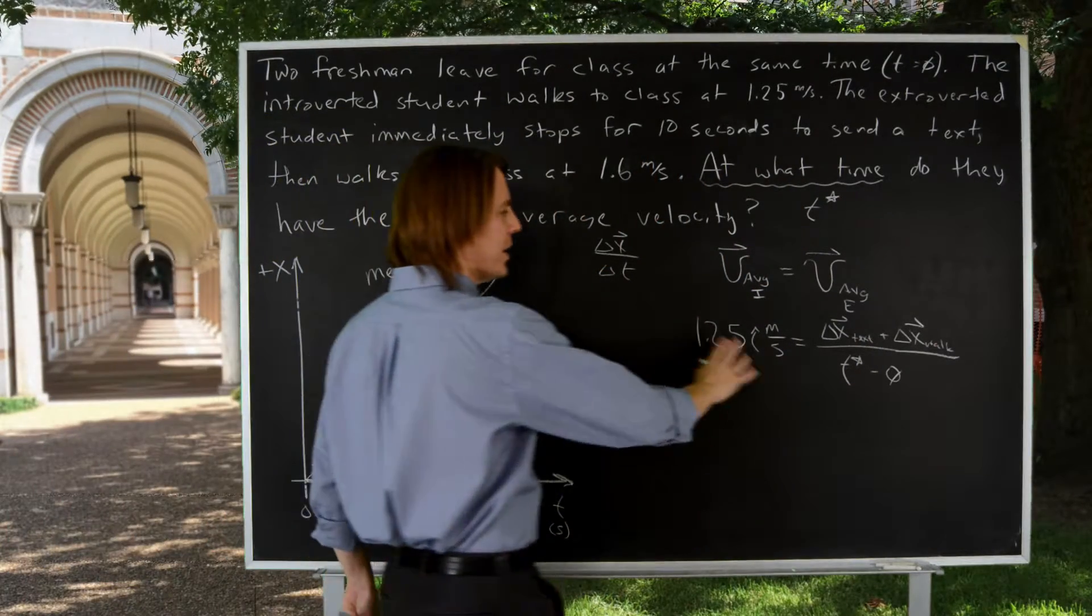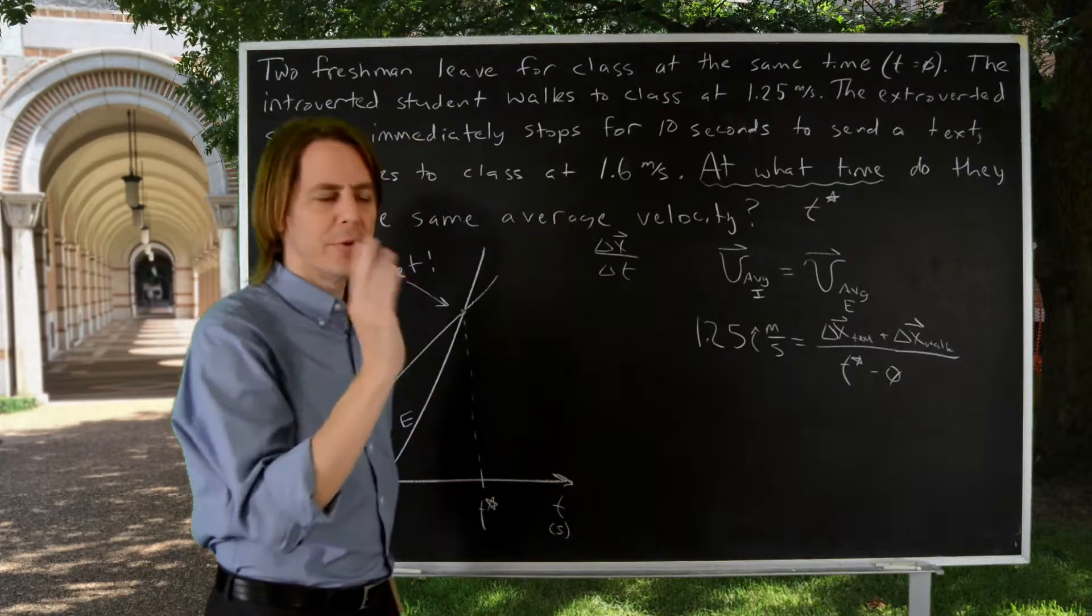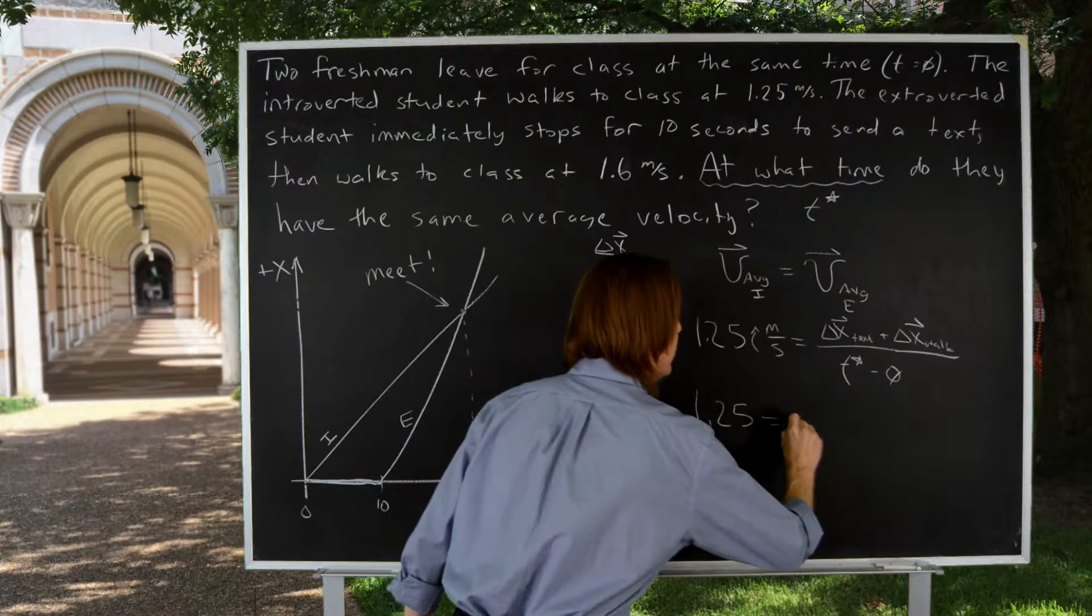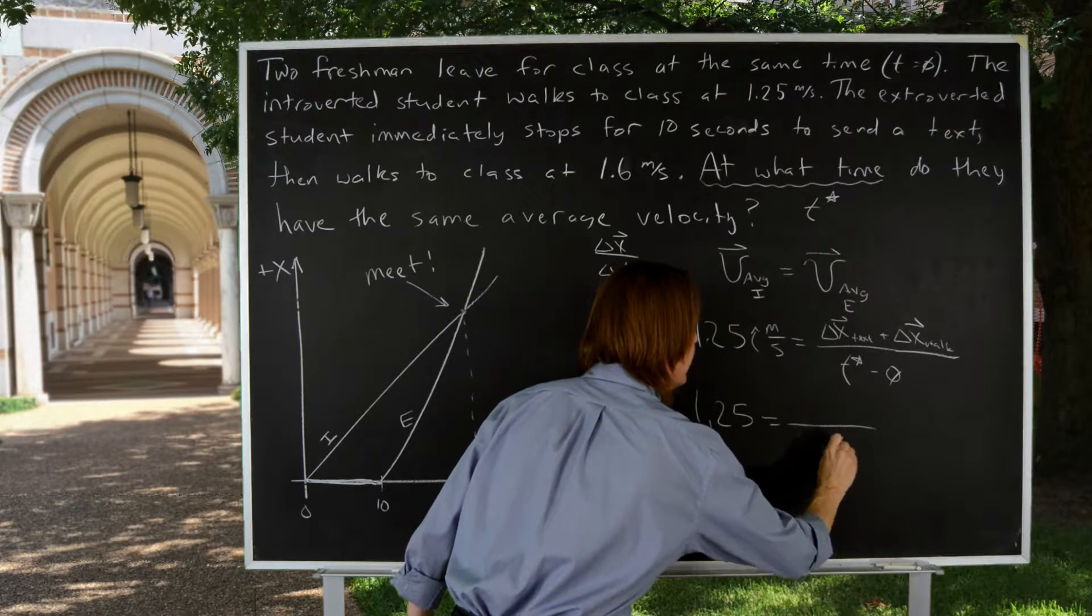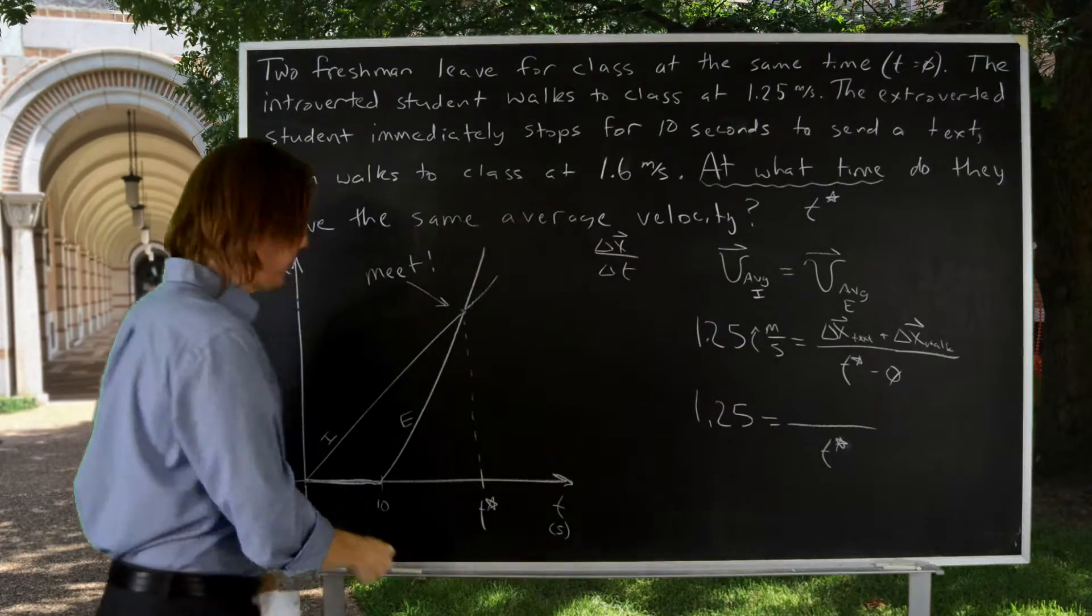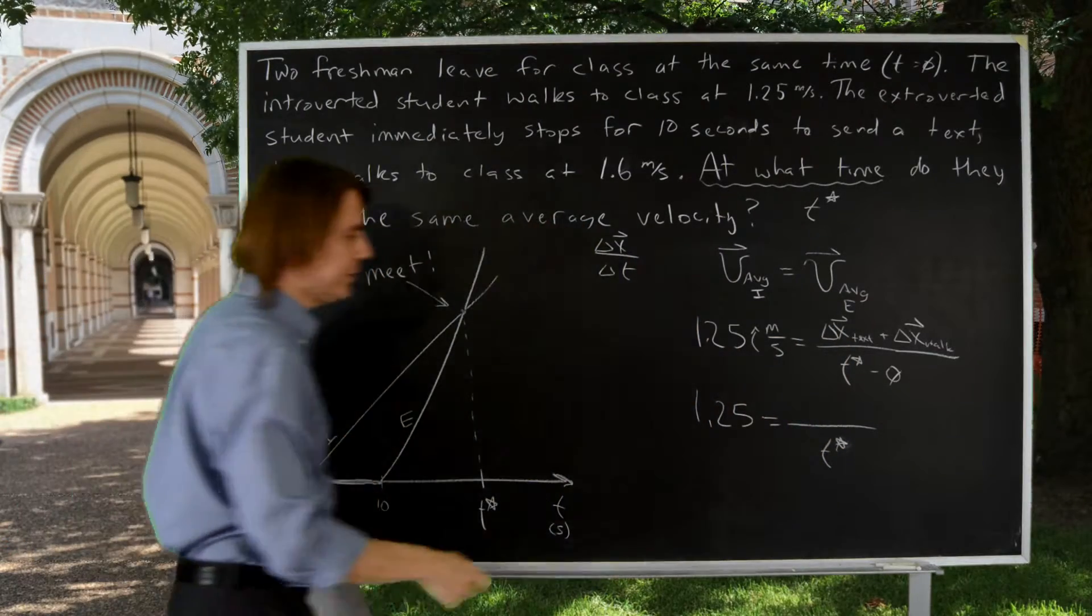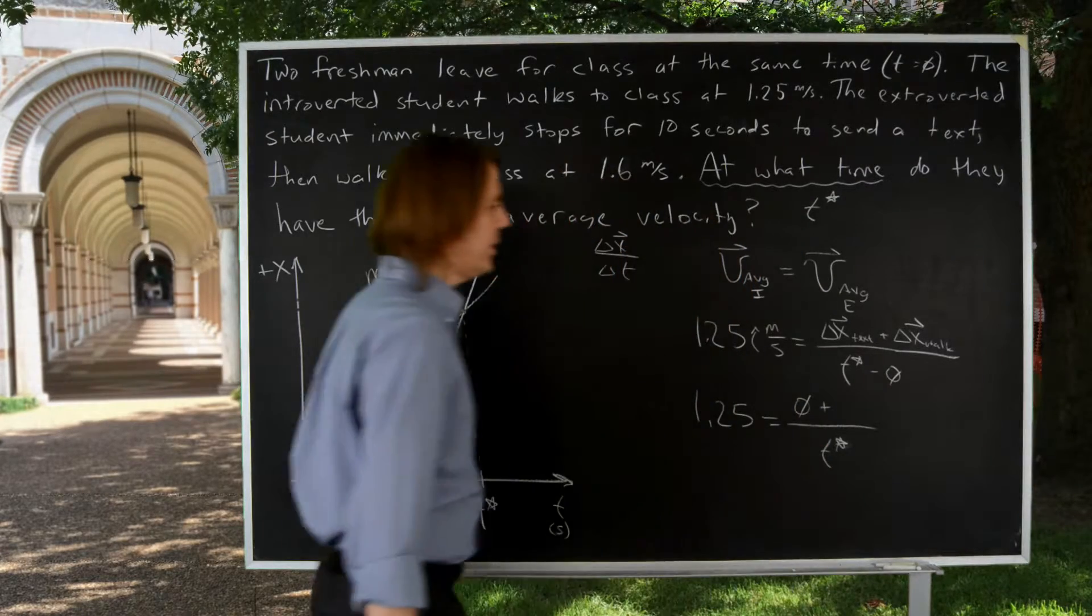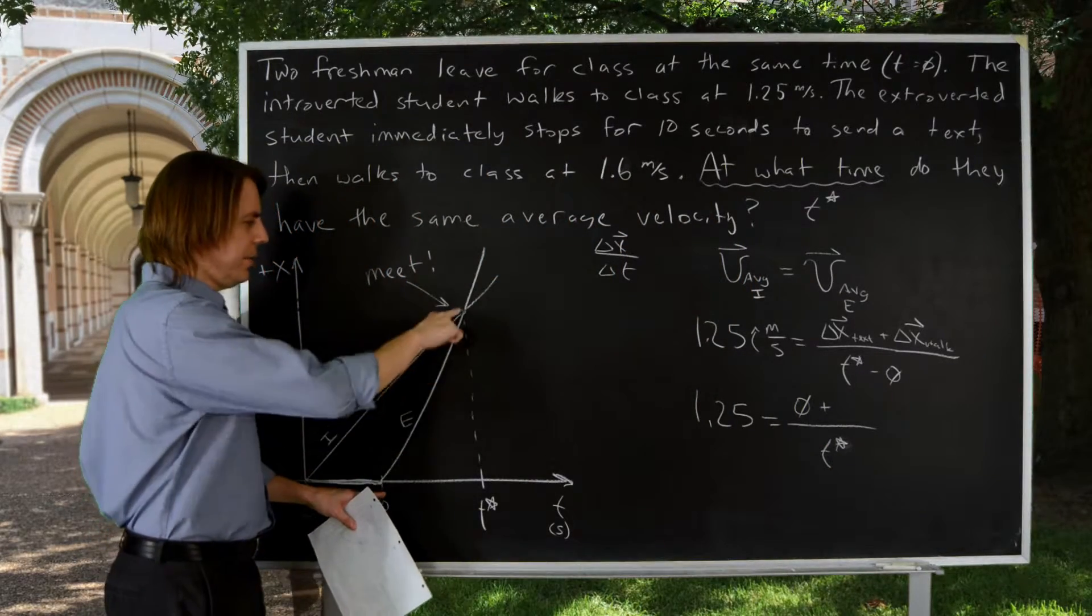And let's see. To keep going, I'm going to ditch all the vector notation of the units. Everything is i hat meters per second, so we'll say 1.25 equals something over T star. The displacement while they were texting is zero, so that's just zero. And then the question is, how far did they get here? What was this displacement?